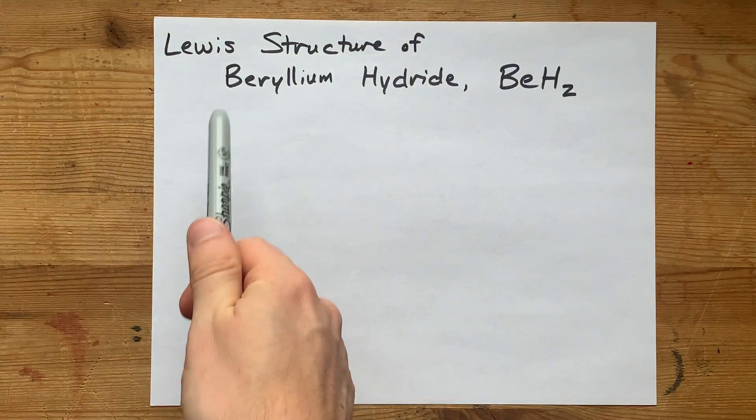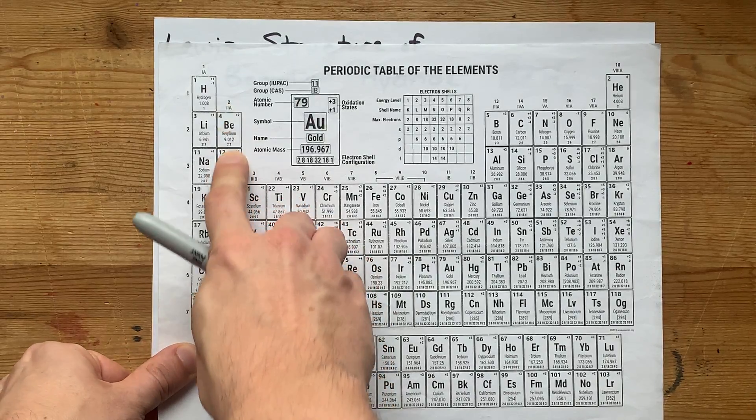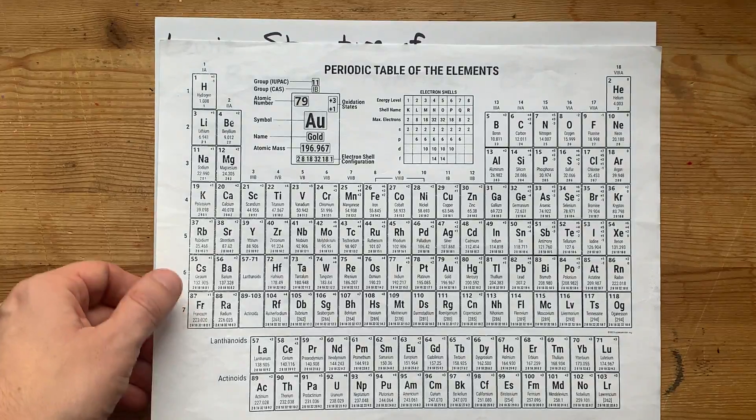We're going to do the Lewis structure of beryllium hydride. Beryllium is a metal from group 2 of the periodic table, an alkaline earth metal.